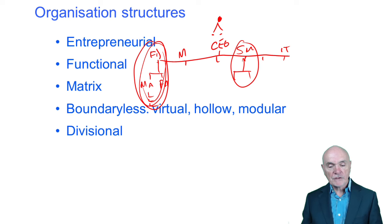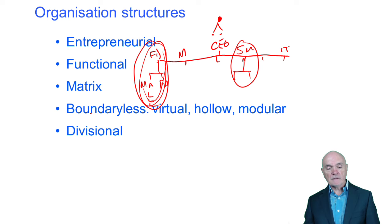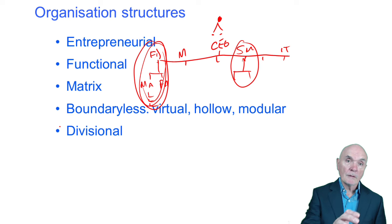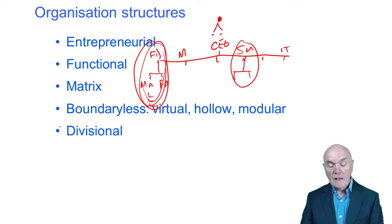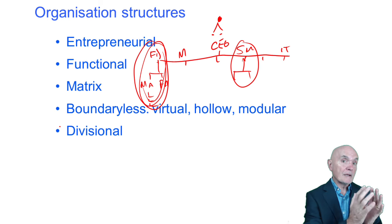So the functional organization is very, very common. Now what I'll do, just before we get on to matrix and boundaryless and so on here, let's just look at divisional structure here. What a divisional structure says is we're now so big, we're operating in North America, we're operating in Europe, we're operating in Asia, we're really dealing with different competitors in those three markets, we may be making slightly different products, there are different laws and rules and regulations in those three markets. Does it really make sense to have only one sales and marketing department, or only one manufacturing department?